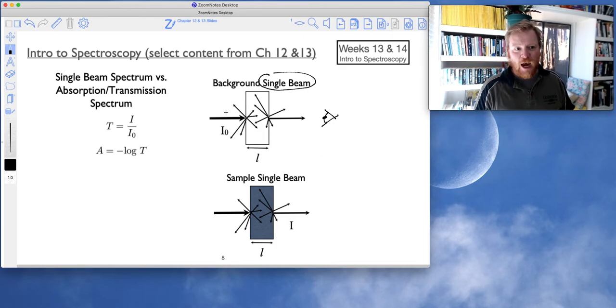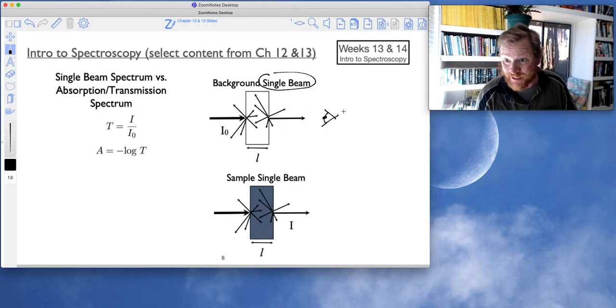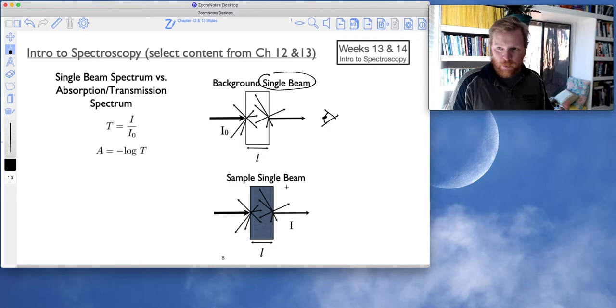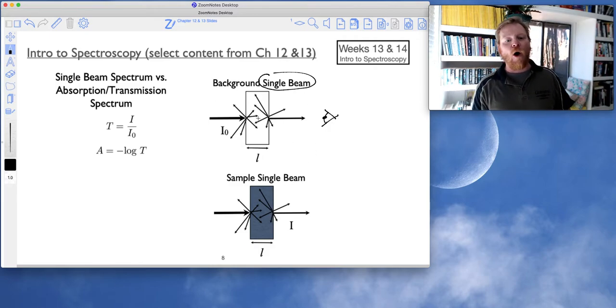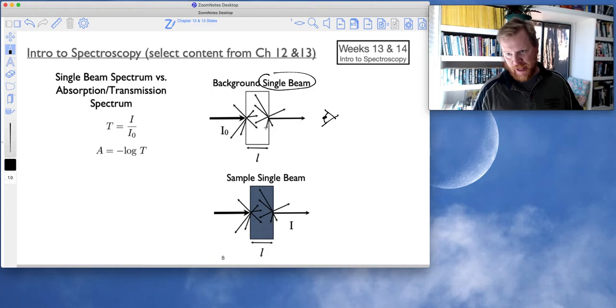If we think about this, this is my incident beam and my transmitted beam. And my transmitted beam won't reflect what has been absorbed. It will just represent what light hasn't made it to the detector, which could be from the absorbance. But it also could be from all of these scattering events.